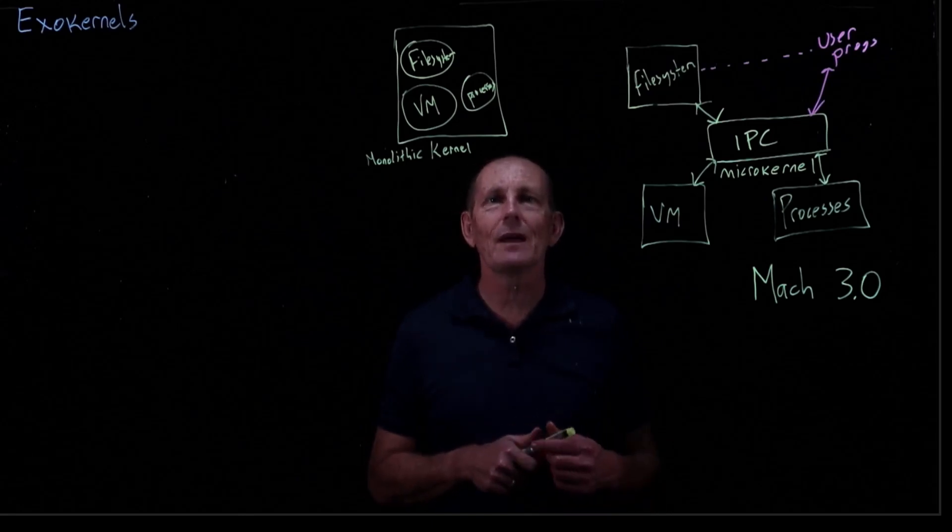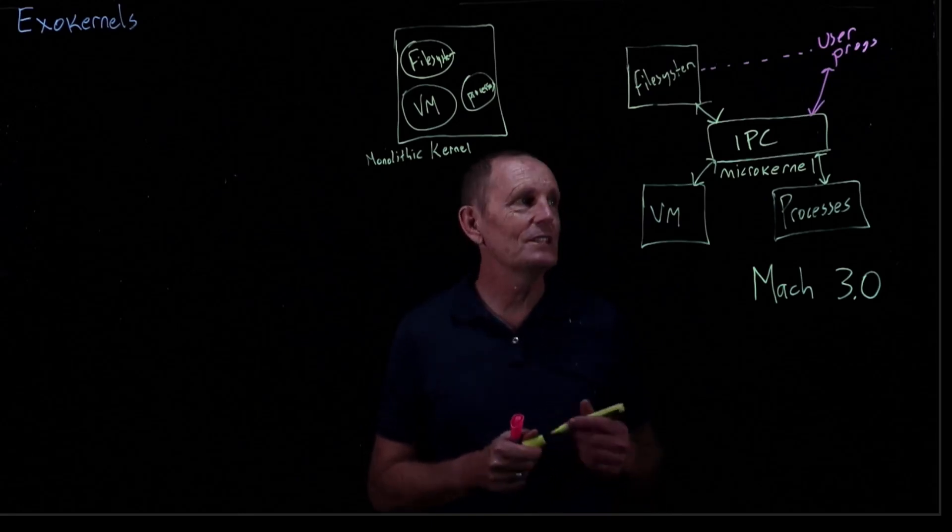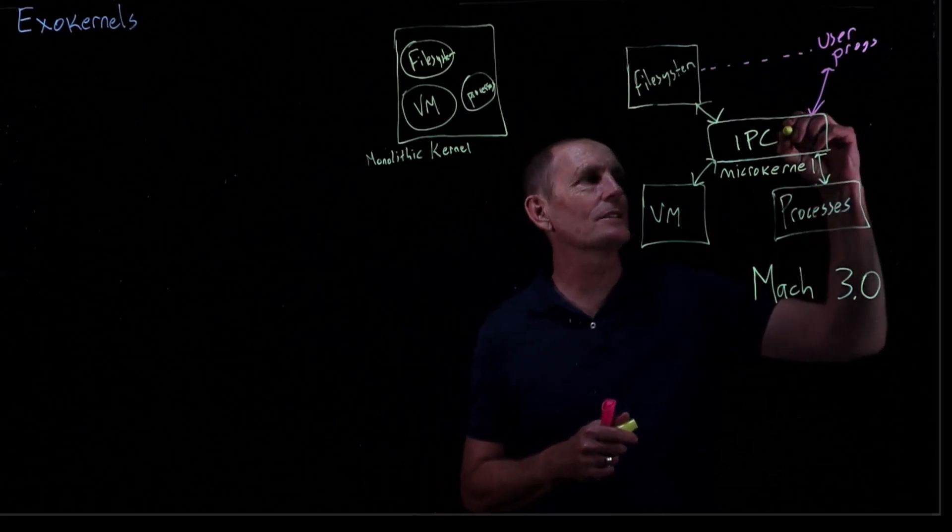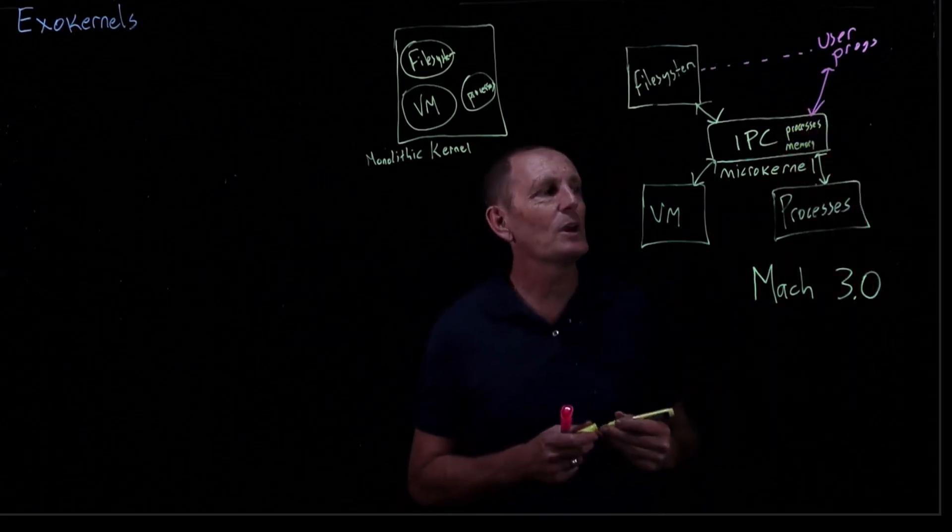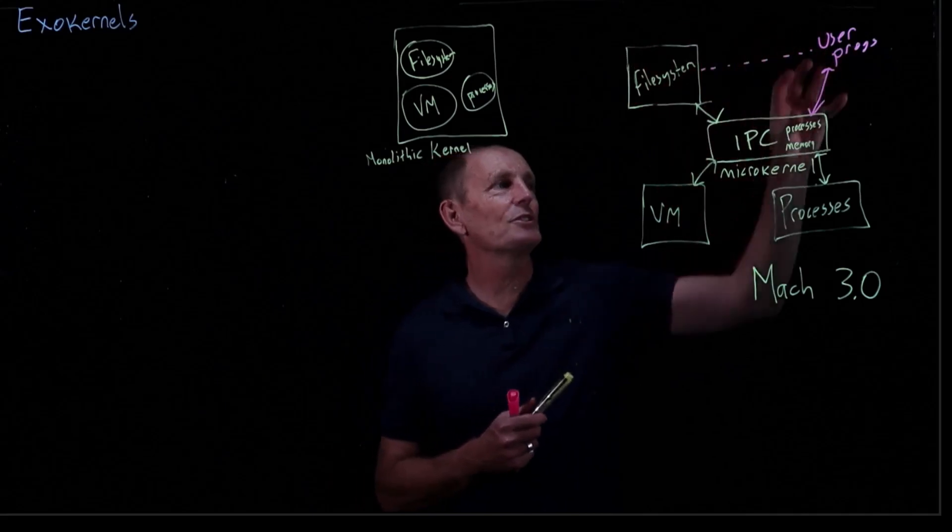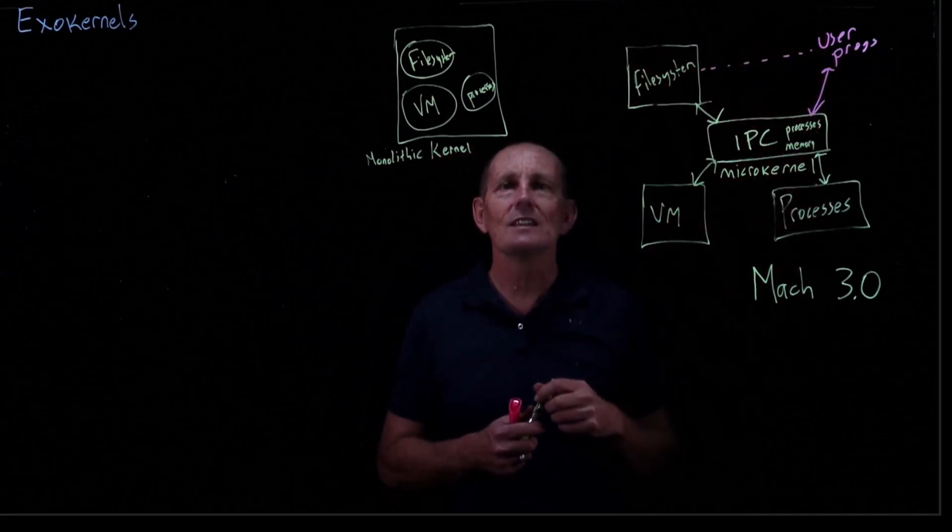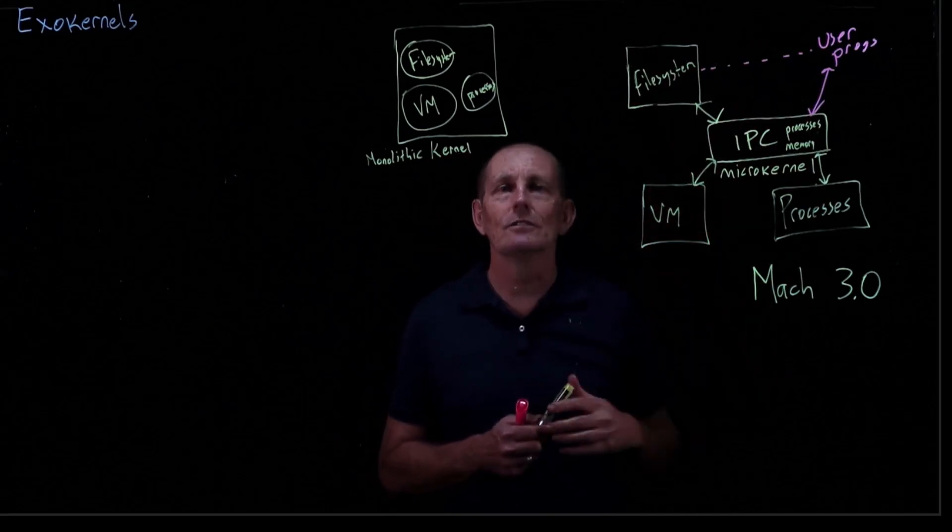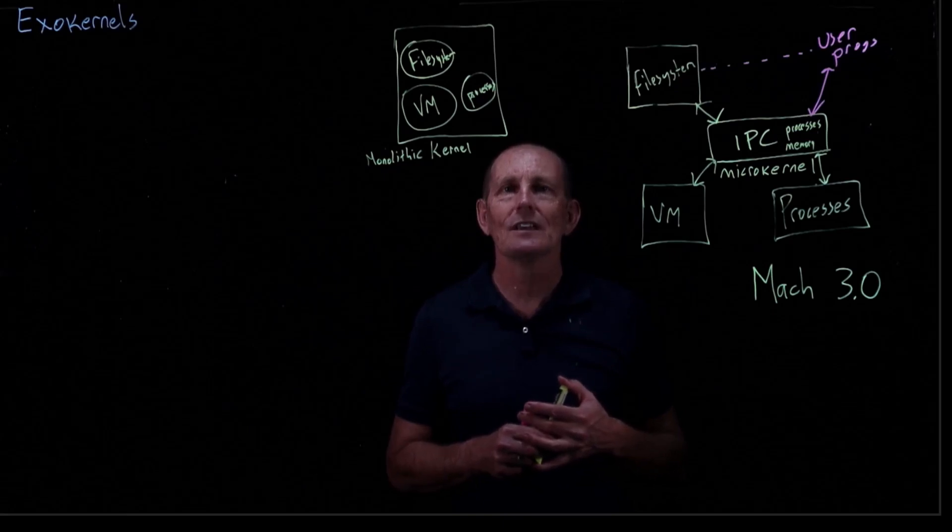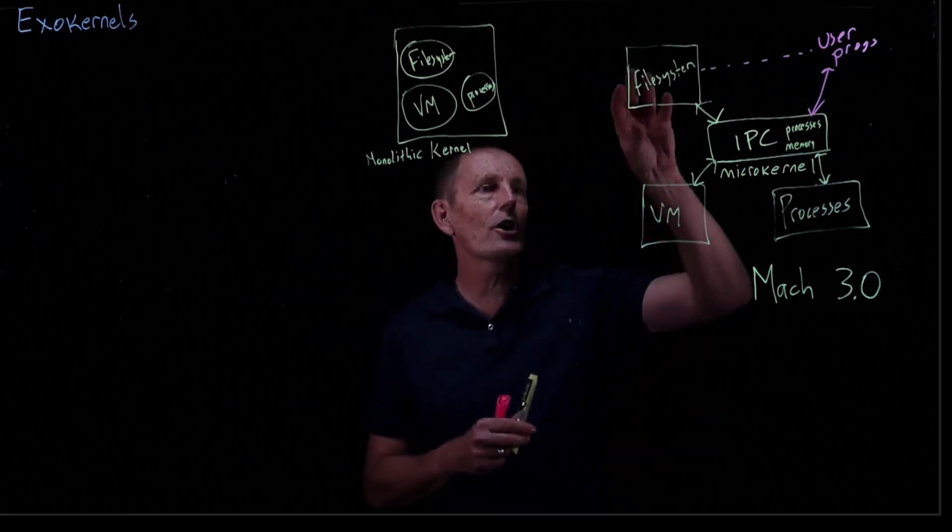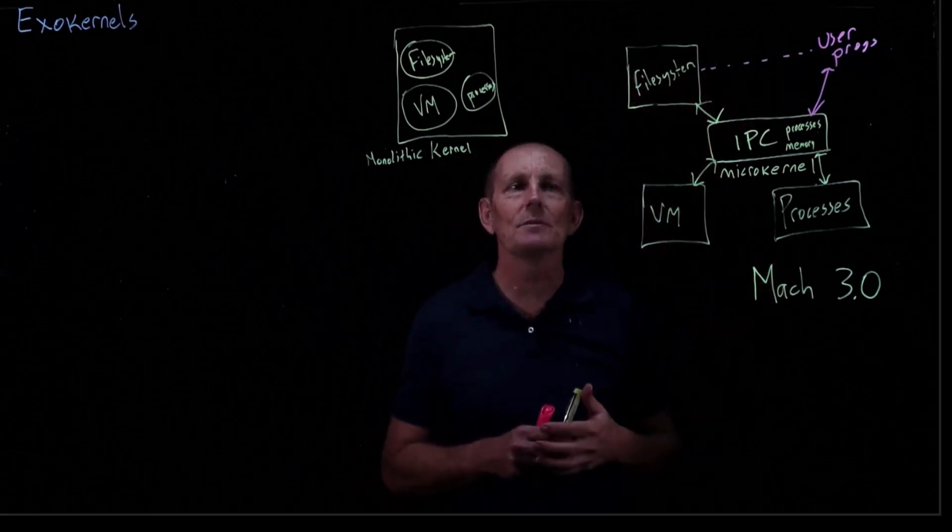So the kernel can't be super tiny. We still need to have some idea of processes and some idea of memory. Some idea of processes because these separate services are actually processes. Some idea of memory because we need to have something that's in charge of allocating this memory. And sometimes it's hard to split the kernel into lots of processes because it also makes it hard to do cross-process optimization.